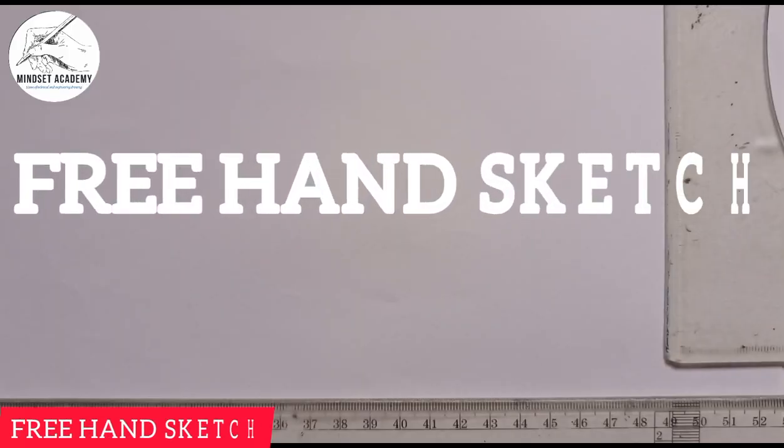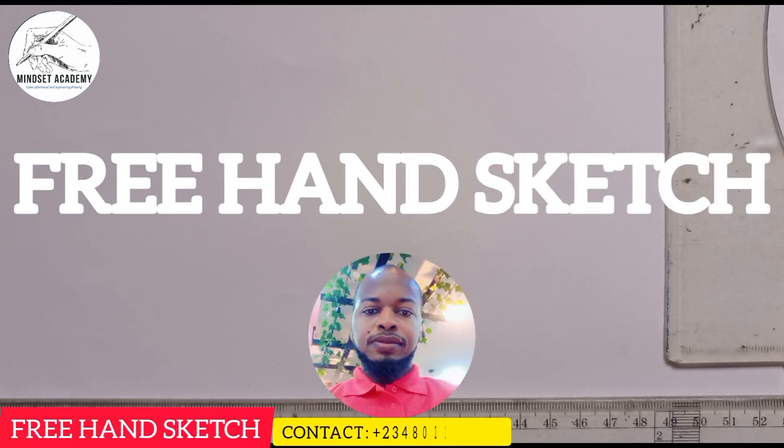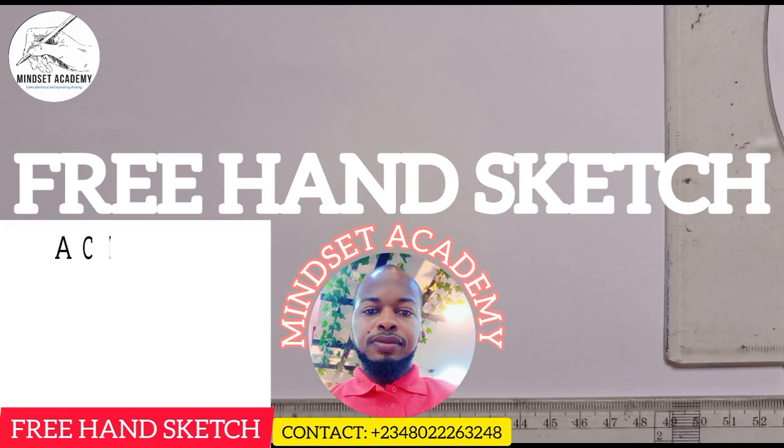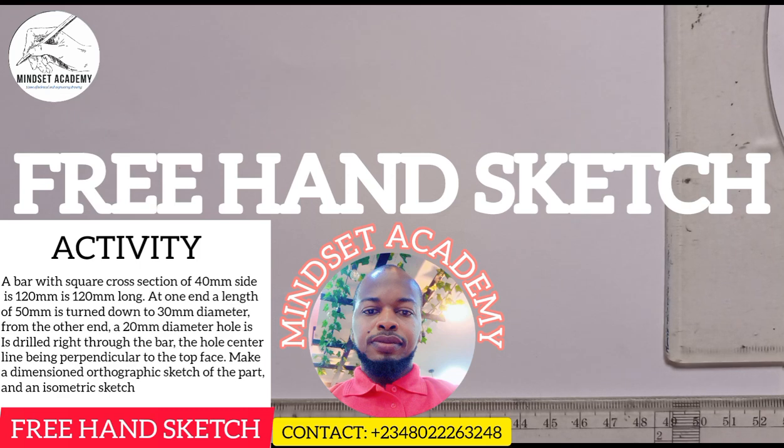Welcome to my channel Mindset Academy where we want to solve the problem that is displayed on the left hand side of the screen. The question says: a bar with square cross section of 40 millimeter side